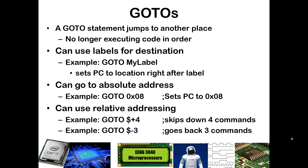You can also do absolute addressing or relative addressing with go-tos. If you want to start executing at the command in memory location 8, you can say GOTO 0x08. Using relative addressing, GOTO $+4 skips down 4 lines, and GOTO $-3 goes back up 3 lines. Typically in this class we're going to use labels, because inserting extra code may cause things that were in memory location 8 to no longer be there, and changing subroutine sizes can throw off relative addressing.